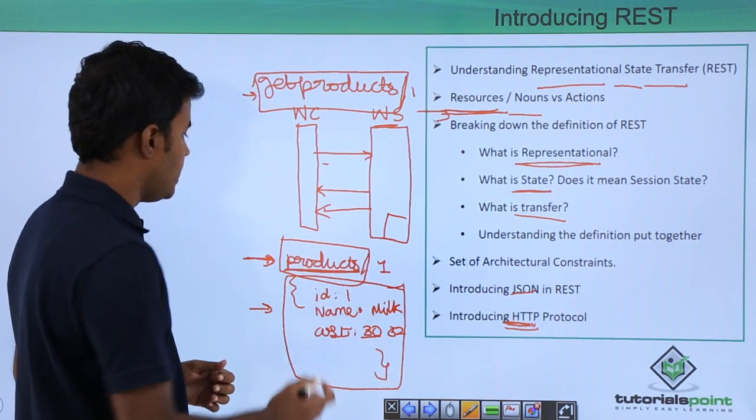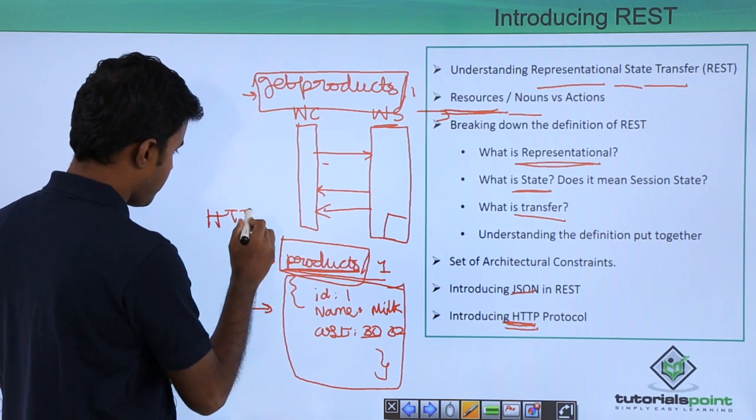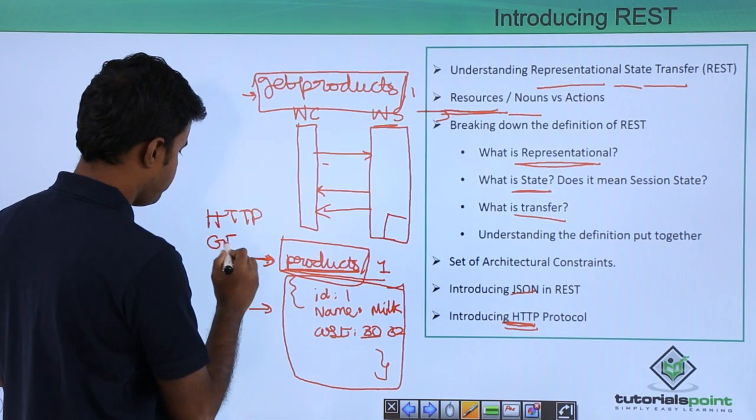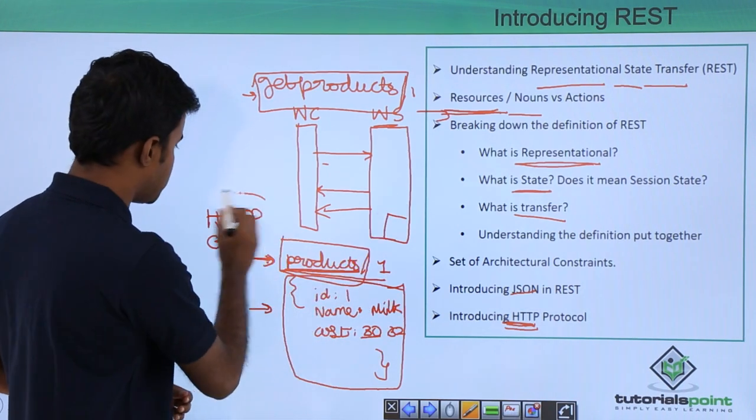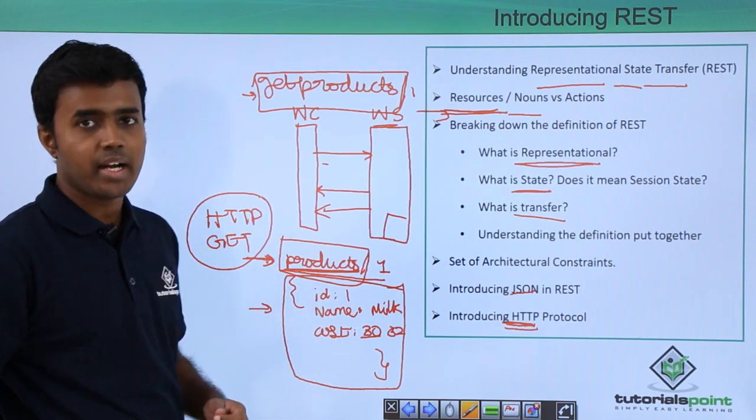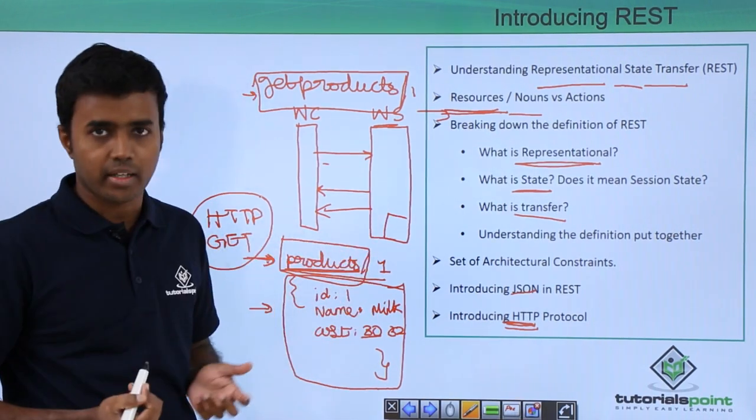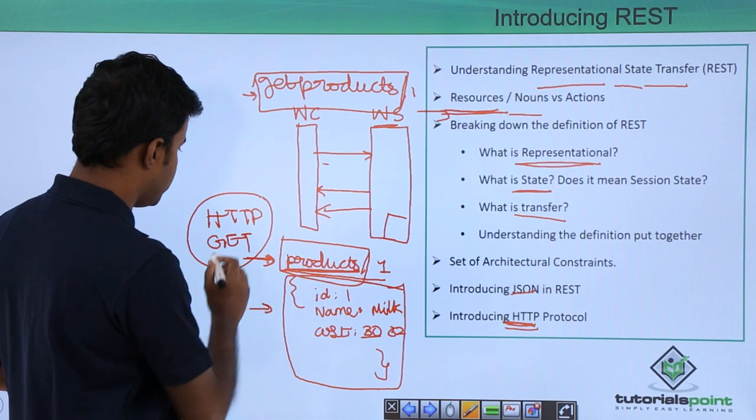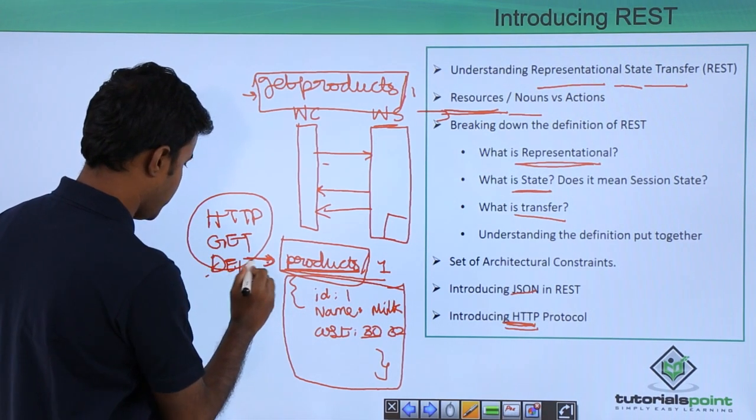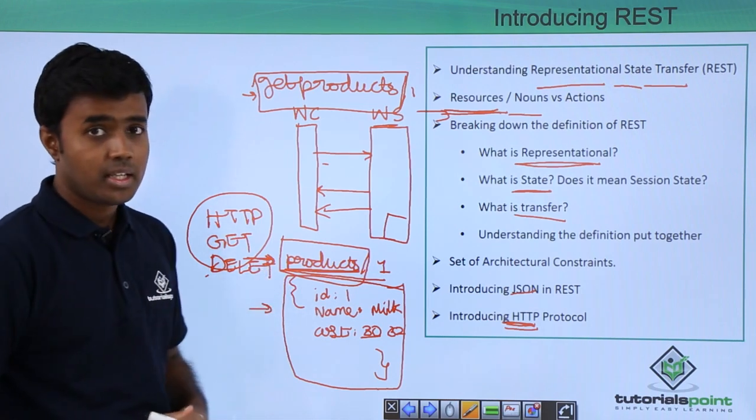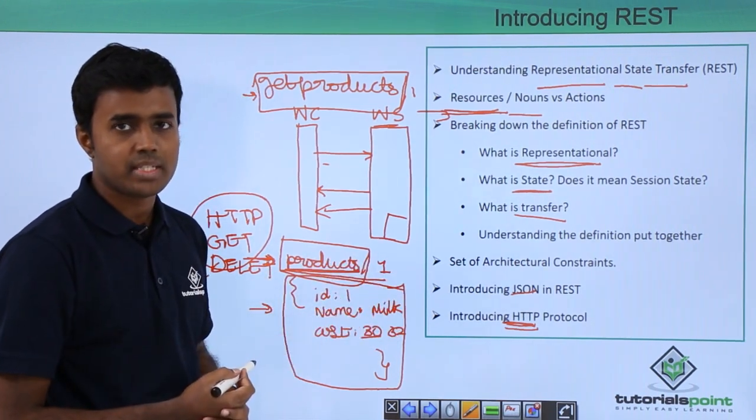Basically, you will send this particular request to a server with an HTTP GET request. And if you send this particular request to the server with an HTTP GET request, it knows that it needs to get the data for the client. If you send the same request with HTTP DELETE, it knows that it needs to go and delete this particular resource on the server.